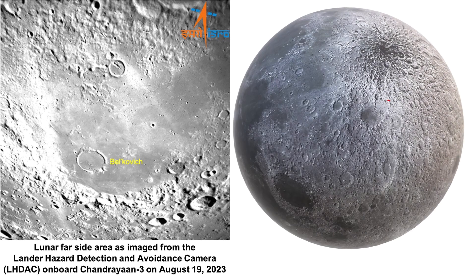This is another crater called Belkovich, a walled plain located along the north-eastern limb of the moon. A walled plain is a type of impact crater that has a relatively flat floor and a wide rim. This formation has endured a history of impacts, leading to its reshaped, softened features. It's often a challenge to view Belkovich in detail from Earth due to its side-view perspective. Belkovich intersects with the Mare Humboldtianum and boasts a hilly, irregular surface outside its rim.